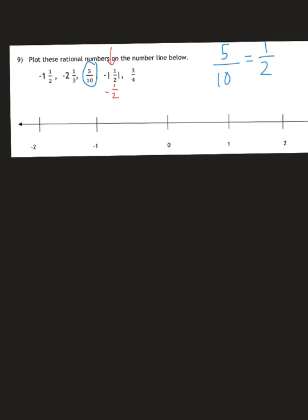Let's start. We have negative 1 and 1 half. Find negative 1, and remember, the bigger the number, the further from 0. Halfway to negative 2 would be negative 1 and 1 half.